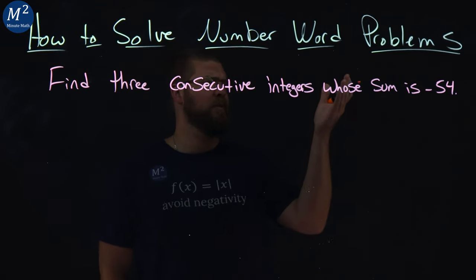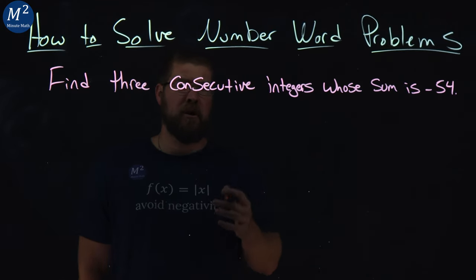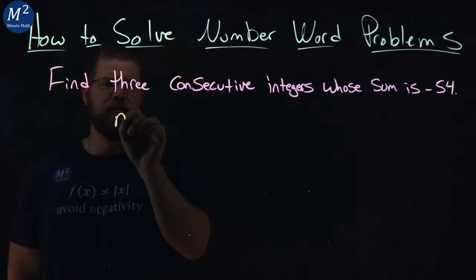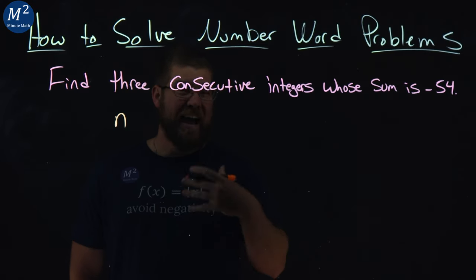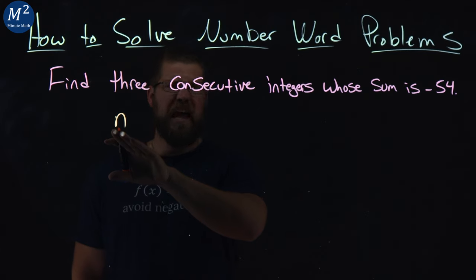But how do we find three whose sum is negative 54? Let's break apart what we know about consecutive integers. Let's say my first integer is n. What's the second one? Well, it's consecutive, so we add one to the previous number. The first one is n, the first integer.